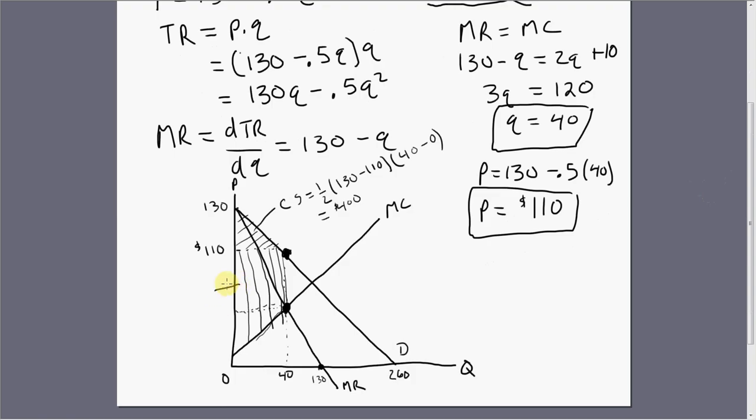So the area of this rectangle is width times length, but we need a value here. To find that value, the easiest thing to do is plug 40 back into marginal revenue or marginal cost. If you plug this 40 into marginal revenue, we're going to get 90. So this value is 90. We would have got the same thing if we plugged it into marginal cost. Marginal cost is 2Q plus 10, so 2 times 40 is 80 plus 10 is 90.